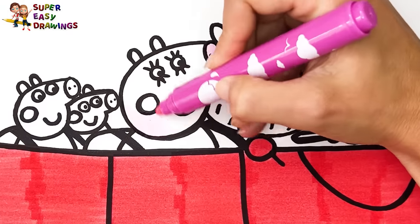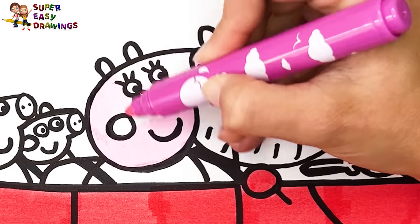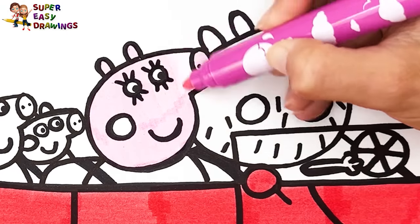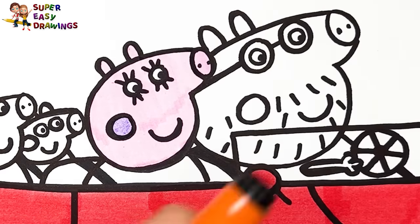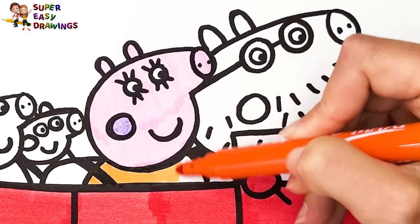Now we color Mommy Pig. I color Mommy Pig skin pink. I color her cheek light purple. Then I use orange for her dress.